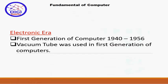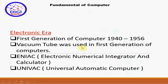Electronic era کے اندر first generation of the computers 1940 سے 1950 کا time period ہے۔ اس میں جو main base device تھا وہ vacuum tube تھا۔ First generation کے تمام computers میں vacuum tubes کو استعمال کیا گیا۔ اس generation کے notable computers میں ENIAC یعنی Electronic Numerical Integrator and Calculator، اور UNIVAC یعنی Universal Automatic Computer شامل ہیں۔